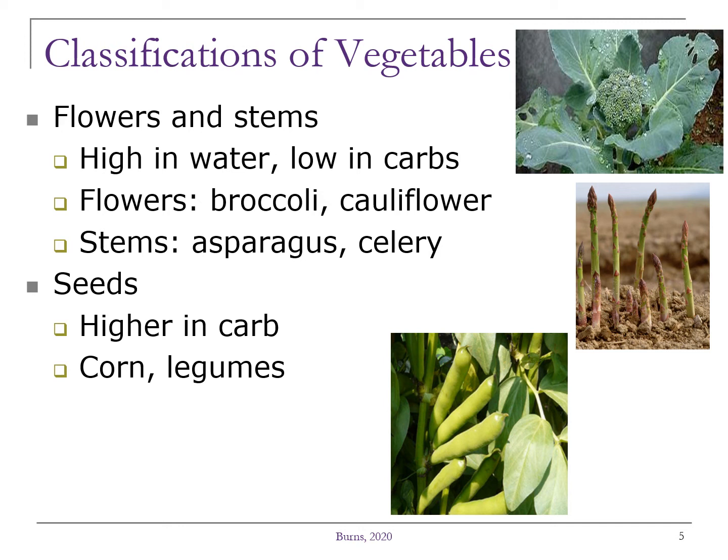Next are the seeds of the plant. These tend to be higher in carbohydrate. So think of corn, peas, and other legumes — your starchy vegetables.